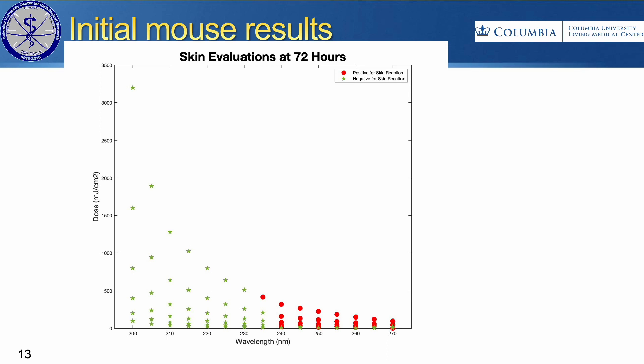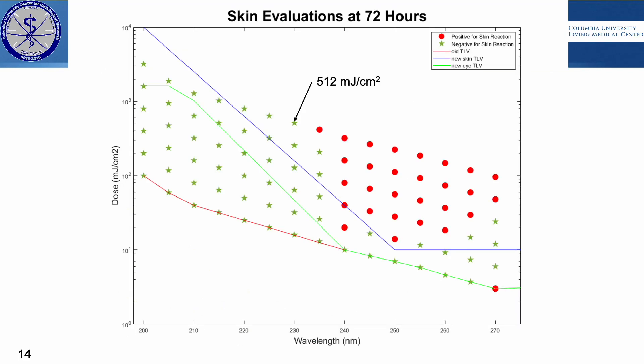We're currently going through follow-up cohorts of eight mice at each wavelength. The most interesting part is the transition from seeing no erythema at 230 up to about 240. These are preliminary results, so we don't have the full cohorts yet. But we can identify a threshold at 235 at probably about 208 millijoules per centimeter squared. Then for 240, we're looking at probably about 12.5 millijoules per centimeter squared — so about 20 times the dose in just that small five nanometer change.